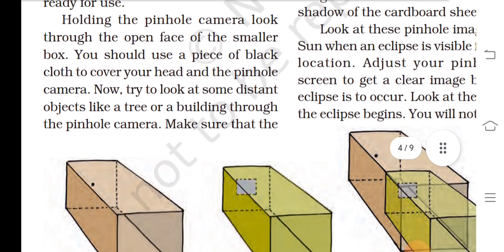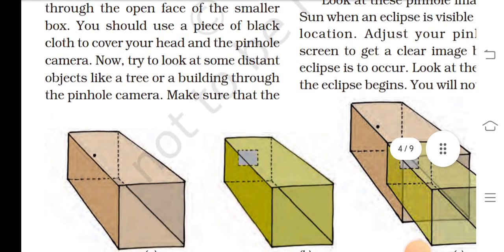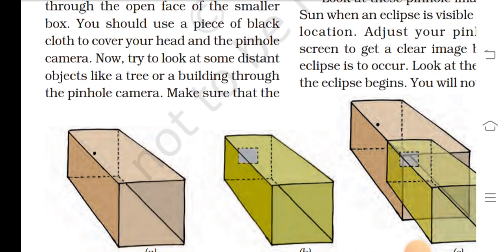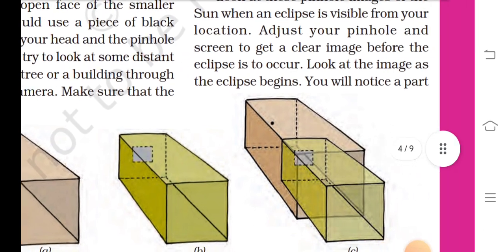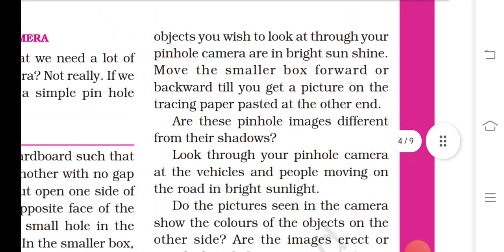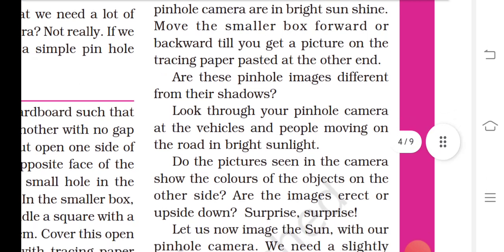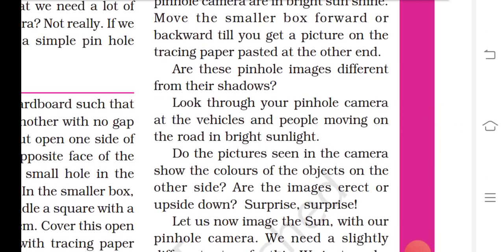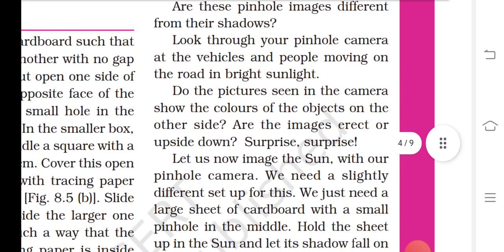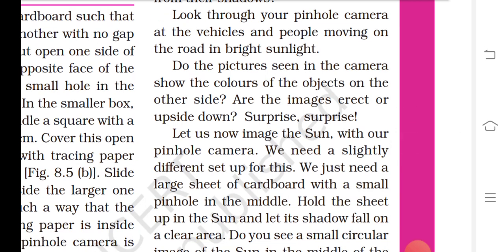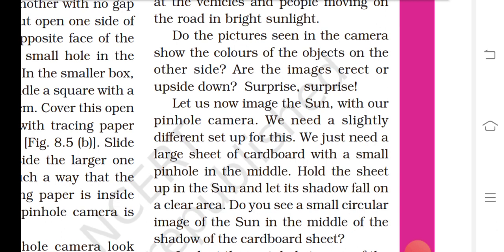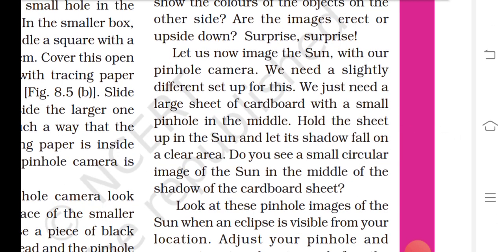Holding the pinhole camera, look through the open face of the smaller box. You should use a piece of black cloth to cover your head and the pinhole camera. Now try to look at some distant object like a tree or building through the pinhole camera. Make sure that the objects you wish to look at through your pinhole camera are in bright sunshine. Move the smaller box forward or backward till you get a picture on the tracing paper pasted on the other end. Are these pinhole images different from their shadows? Look through your pinhole camera at the vehicles and people moving on the road in bright sunlight. Do the pictures seen in the camera show the colors of the objects on the other side? Are the images erect or upside down? Surprise, surprise.